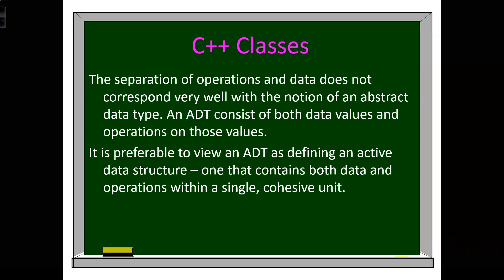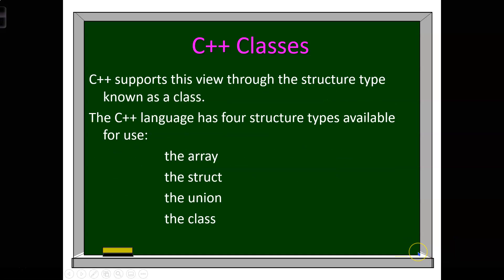The separation of operations and data does not correspond very well with the notion of an abstract data type. An ADT consists of both data values and operations on those values. It is preferable to view an ADT as defining an active data structure — one that contains both data and operations within a single cohesive unit. C++ supports this view through the structure type known as the class.